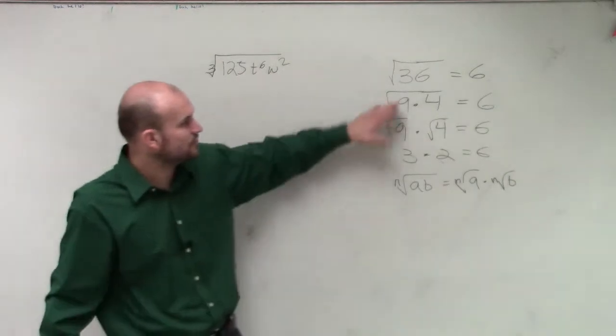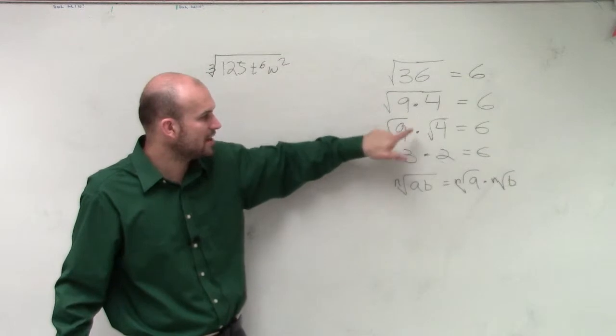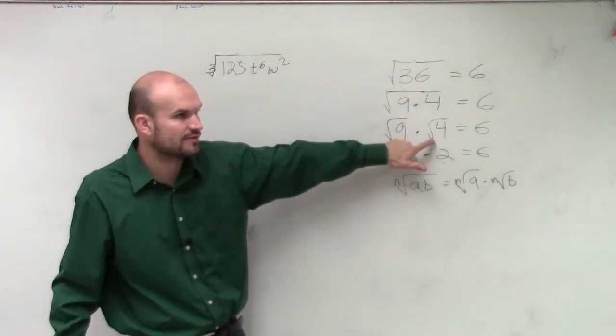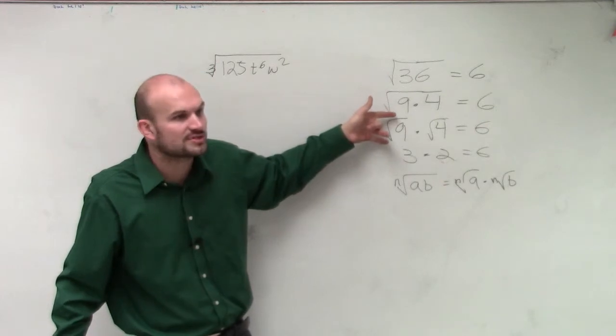All it states is if you have two terms multiplied under a radical, you can break them up into the square root of 9 times the square root of 4. Now, this is for square roots. It doesn't matter. You can do this for cube roots as well.